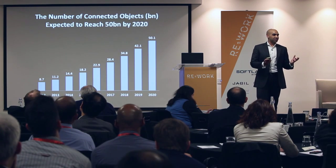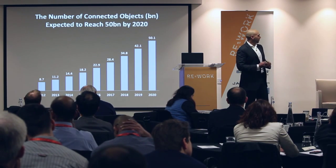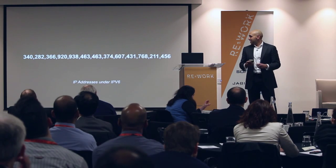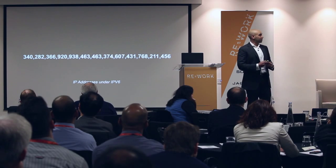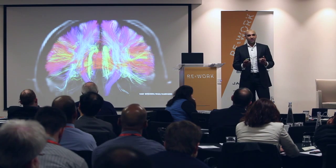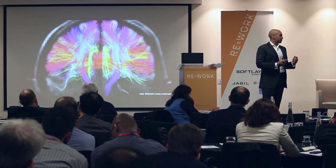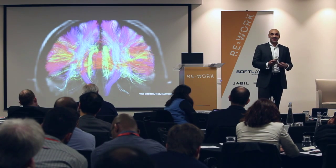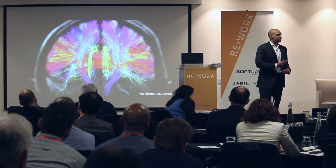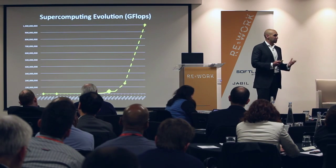Cisco estimates there'll be 50 billion devices connected to the internet by 2020 — that's half of the total number of neurons in the human brain, which is widely accepted as the most complex object in the known universe. To deal with all of these devices, thanks to the IPv6 protocol, we have enough internet addresses to assign a hundred addresses to every atom on the face of the earth. Now let's look at the hardware the brain has to deal with all of this data.